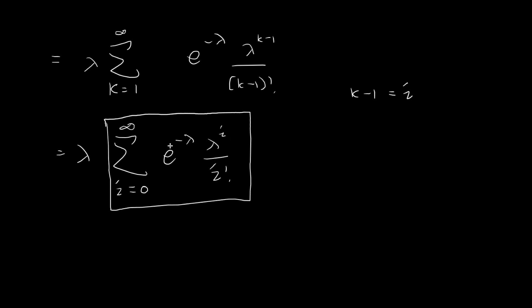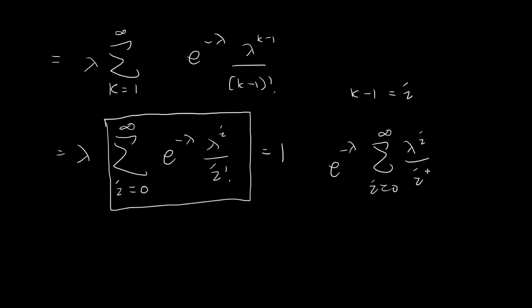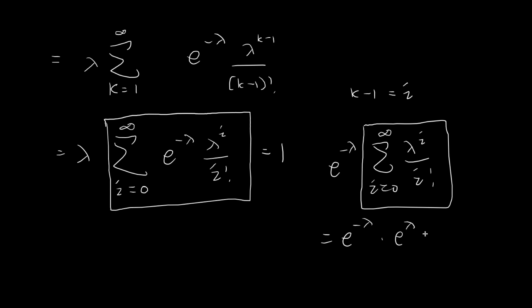This entire term is literally just the sum of all the probabilities of the Poisson probability mass function. By definition, the sum of all probabilities is just equal to 1, so this entire term is just equal to 1. Another way to think about it: we can pull out e to the power of negative lambda and sum the remaining terms, which form the Taylor series expansion for e to the power of lambda. So it's e to the negative lambda times e to the lambda, which is just 1.